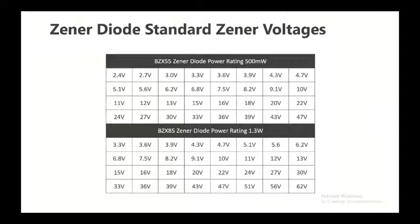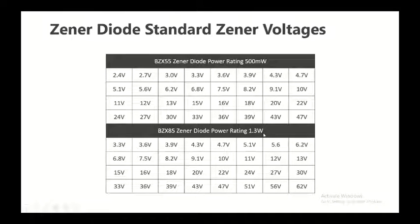There are different types of Zener diodes, each having a specific constant voltage value, which will be our constant output voltage at the output of the voltage regulator. When a Zener diode has a power rating of 500mW, the voltage ranges from 2.4V to 47V. When the Zener diode rating is 1.3W, the voltage ranges from 3.3V to 62V. These are the different constant voltage outputs obtainable at the voltage regulator.